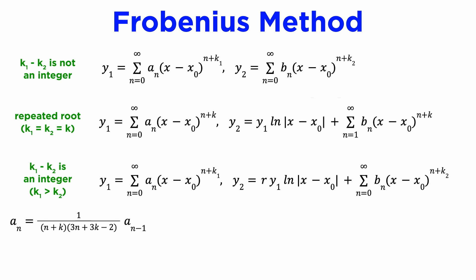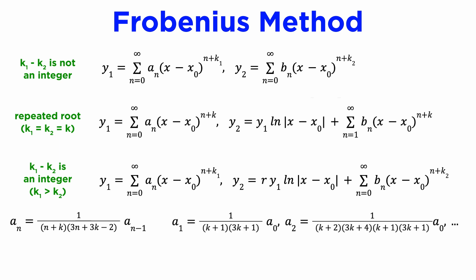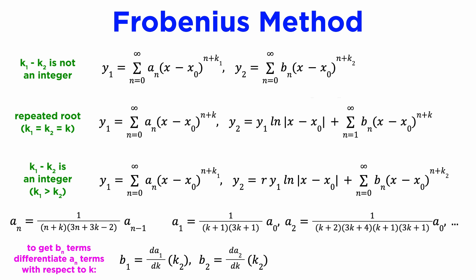This time, instead of substituting in our indicial equation roots, we will keep this recurrence relation general, so that we can find aₙ in terms of n and k. We need to evaluate each of these terms separately, meaning we need a₁ as a function of k, a₂ as a function of k, and so on. To find b₁, we take the expression for a₁, differentiate it with respect to k, and then plug in our second root k₂ for k. Likewise, to find b₂, we take the expression for a₂, differentiate it with respect to k, and then plug in k₂, and so on, for as many terms as we wish to compute for the series bₙ.